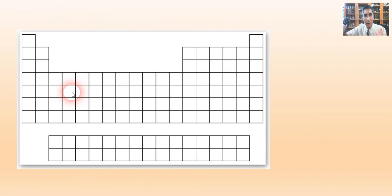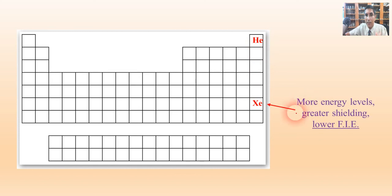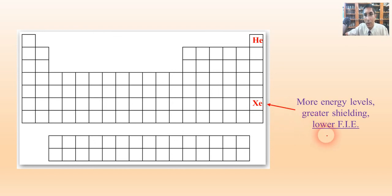Looking at the up-down comparison, let's consider helium and xenon. Both are noble gases with fairly high first ionization energies, but the factor here is shielding effect. Xenon has greater shielding because it has more energy levels, so since those outer electrons are shielded from the nucleus, it's a little easier to remove one — xenon has a lower first ionization energy.